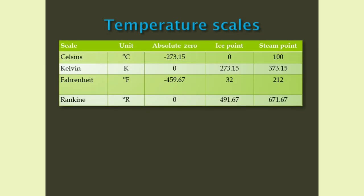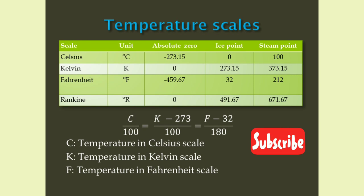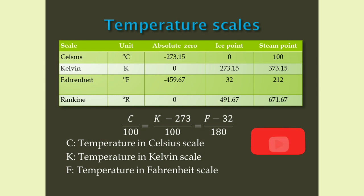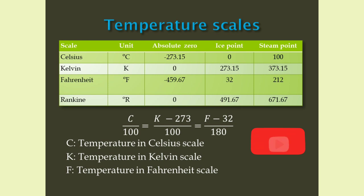Temperature scales. In the table, the values of temperature at absolute zero, ice point and steam point for Celsius, Kelvin, Fahrenheit and Rankine scales are given. A relation between Celsius, Kelvin and Fahrenheit is also given: C/100 = (K − 273)/100 = (F − 32)/180, where C is the temperature in Celsius scale, K is the temperature in Kelvin scale, and F is the temperature in Fahrenheit scale.